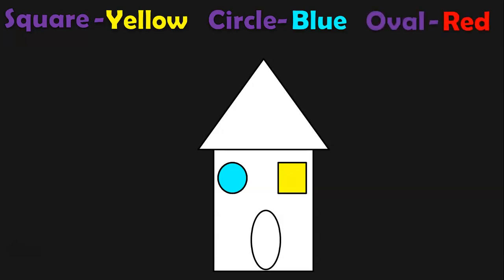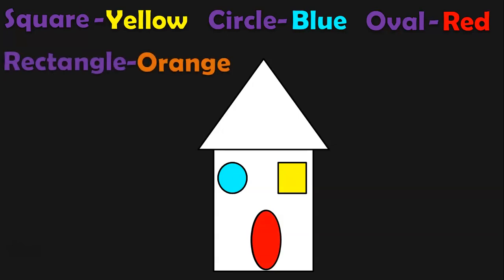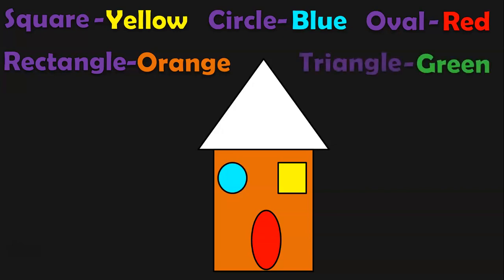Oval should be colored in red. The door of the house is in oval shape, so make it in red color. The rectangle is to be colored in orange color. This is a rectangle and we have colored it in orange color. Identify the triangle and color it with green. This is a triangle and we have colored it with green.